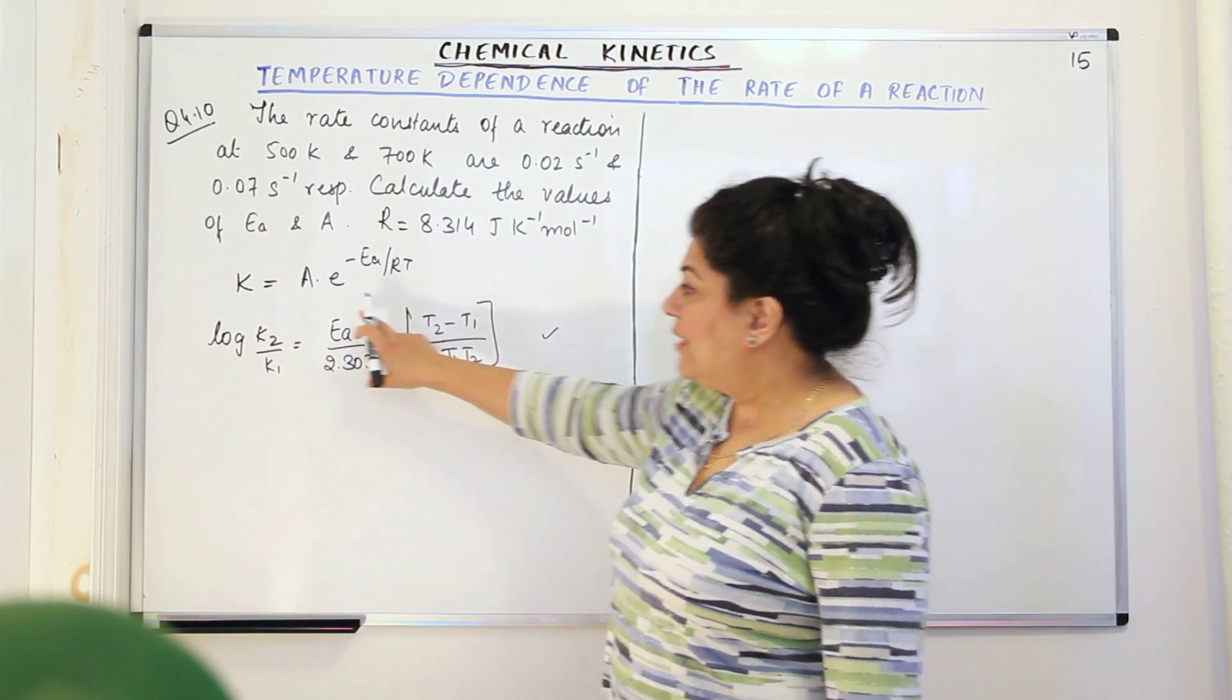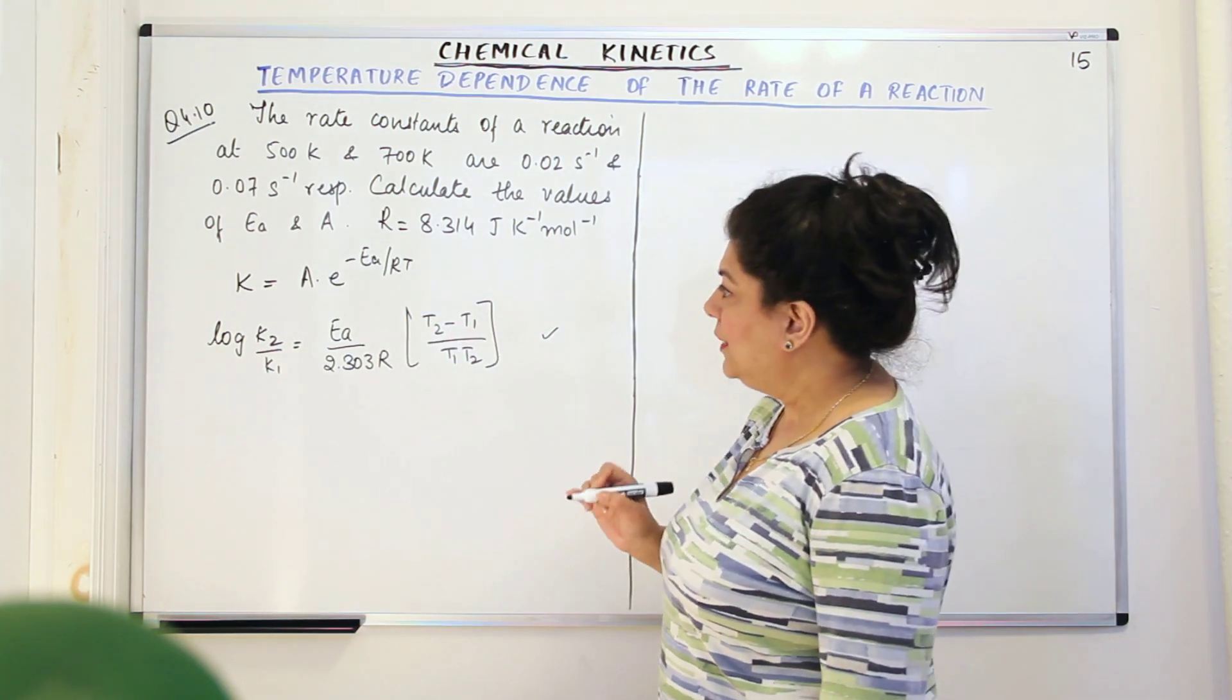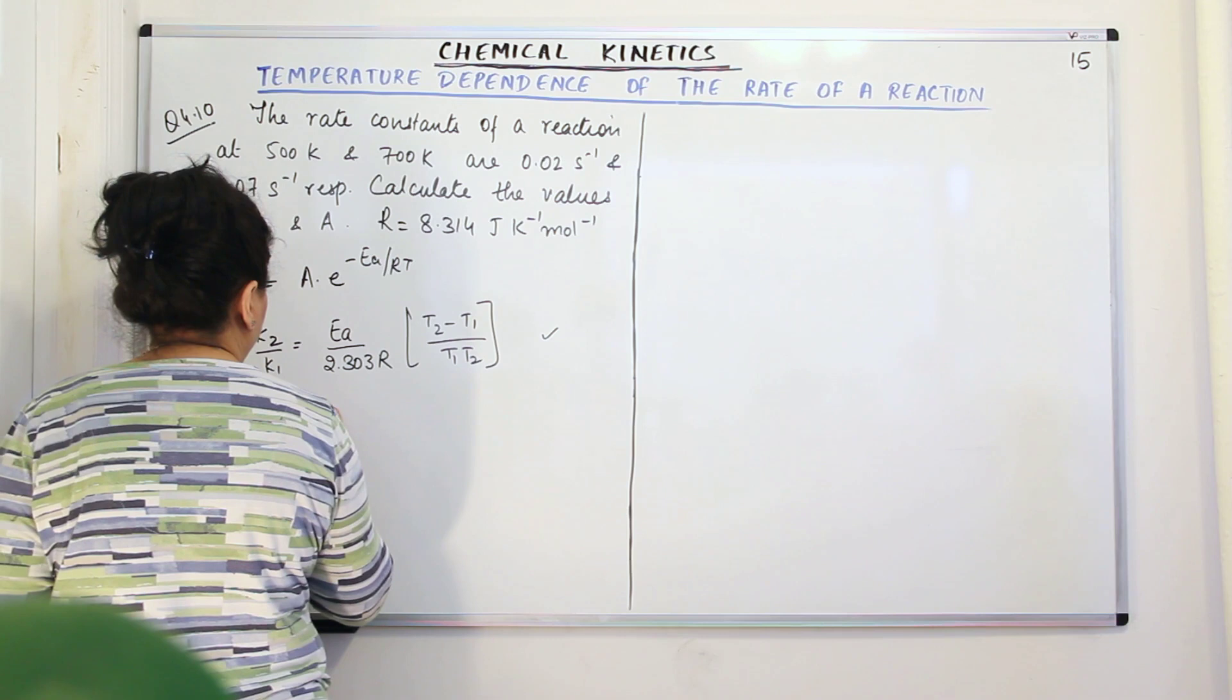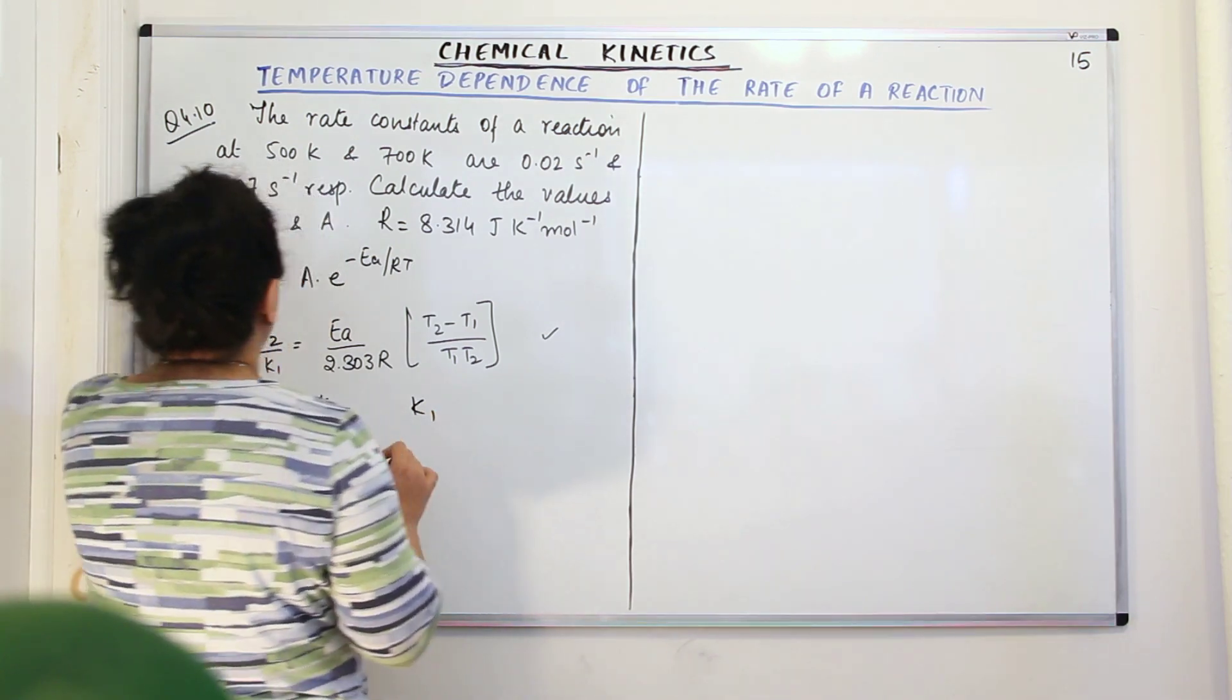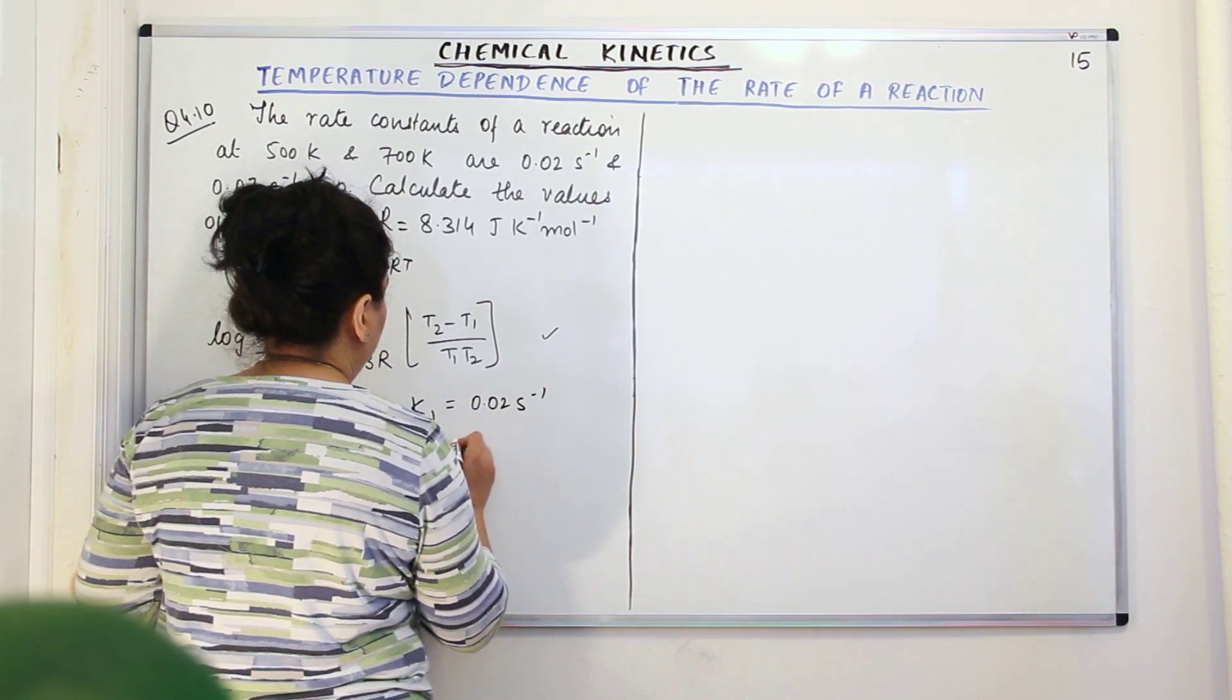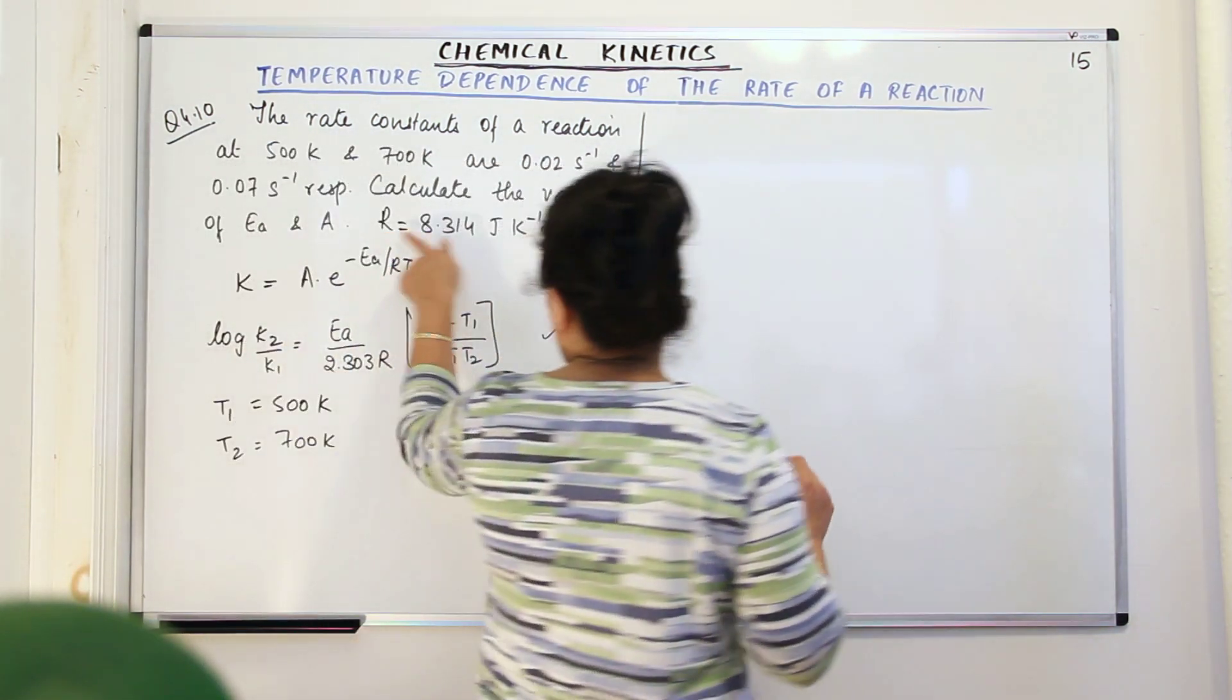Therefore, in order to find that out, once we calculate the value of Ea, we can calculate the value of A by substituting the value of Ea in this equation and temperature. So let us start. What all is given to us? So we have T1 is 500 Kelvin, T2 is 700 Kelvin. K1, the rate constants are also given. For T1, the rate constant is 0.02 per second. And K2 rate constant for 700 Kelvin is 0.07 per second.